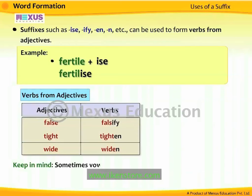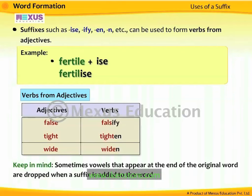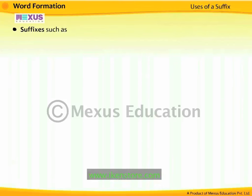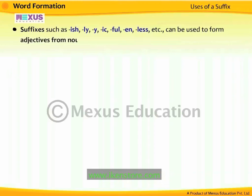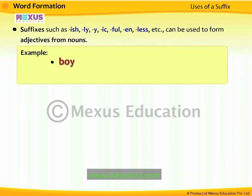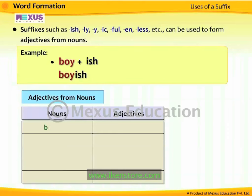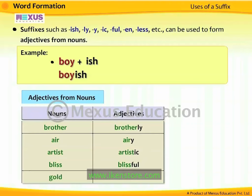Keep in mind: sometimes vowels that appear at the end of the original word are dropped when a suffix is added. Suffixes such as -ish, -iy, -ic, -ful, -in, etc. can be used to form adjectives from nouns. For example, the noun 'boy' plus the suffix '-ish' forms the adjective 'boyish.' Other examples: 'brother' becomes 'brotherly,' 'air' becomes 'airy,' 'artist' becomes 'artistic,' 'bliss' becomes 'blissful,' and 'gold' becomes 'golden.'